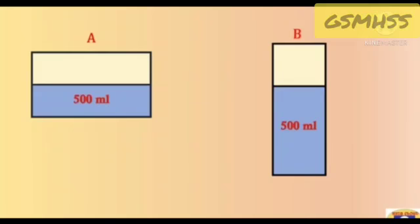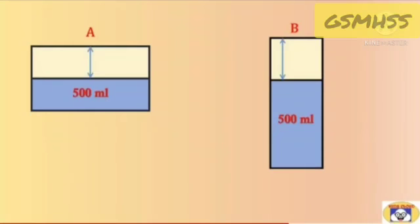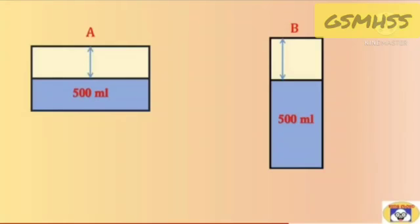One more example. Here, two bottles are there. Bottle A and Bottle B. Bottle A contains 500 ml and Bottle B also contains 500 ml. It is not the capacity of bottle A and B. There is some space in the bottles. If we fill this space, we can add extra 500 ml in bottle A. So, the capacity of bottle A equals 500 ml plus 500 ml equals 1000 ml.